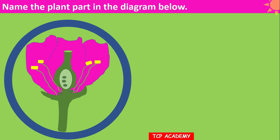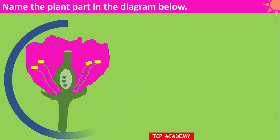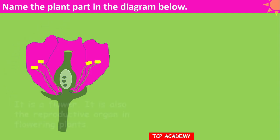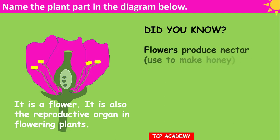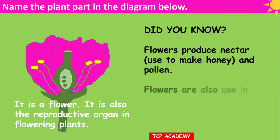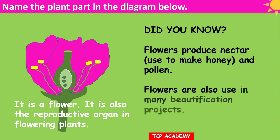One might ask, what's this diagram? Name the part of a plant found in the diagram below. You have 10 seconds to come up with the name. It is a flower — it is also the reproductive organ in flowering plants. Did you know flowers produce nectar which is used to make honey, and they also produce pollen?